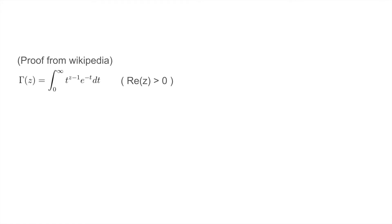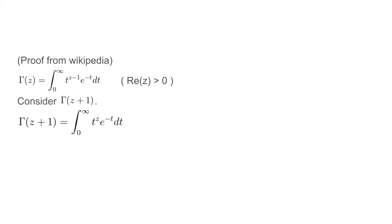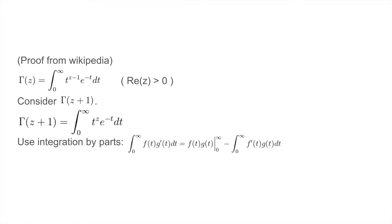Now consider gamma of z plus 1. This is equal to the integral from 0 to infinity of t to the z times e to the negative t dt, by the definition of the gamma function. We can now use integration by parts.